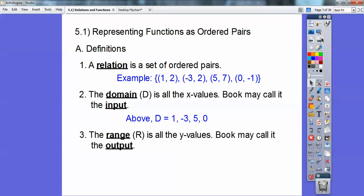The range is all the Y values. And the book sometimes calls it the output. And above, it's all the second numbers. 2 and then 2 repeats, so you don't have to write it again. And 7 and negative 1.